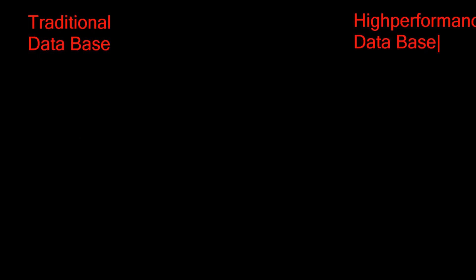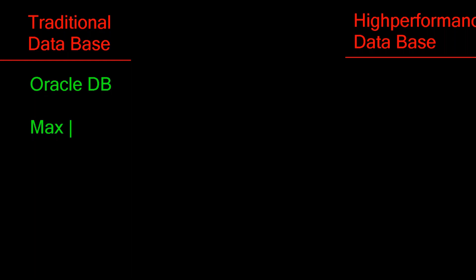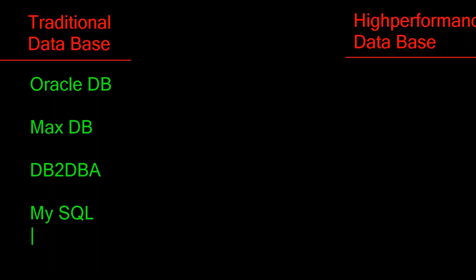Now let's discuss what High Performance means. If you take traditional databases, examples include Oracle, MaxDB, DB2, MySQL, and Sybase. For high performance, until now we have only one database, and that is HANA.